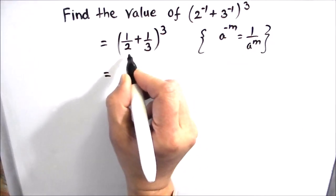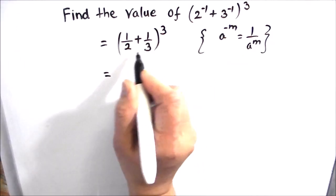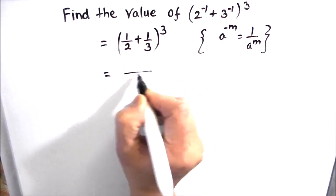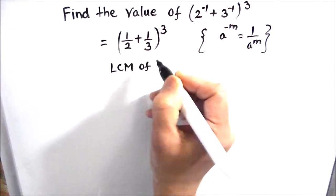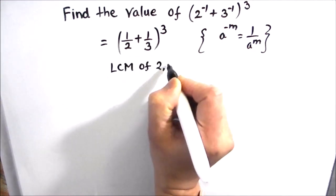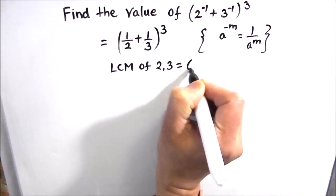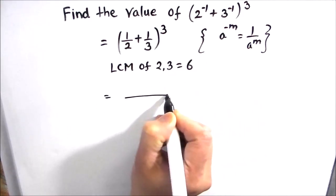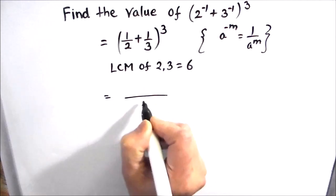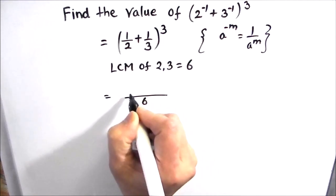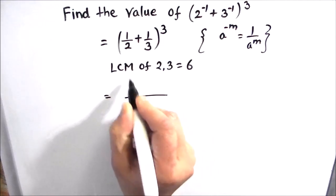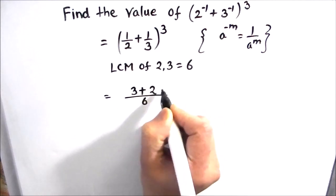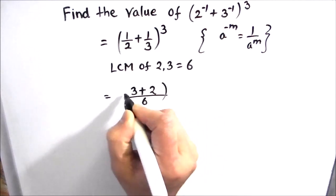Now we have 1 upon 2 plus 1 upon 3, and we can easily add the two fractions by finding the LCM. The LCM of 2 and 3 is 6. So let's make the denominator common, that is 6. So 2 times 3 is 6 and 3 times 1 is 3, plus 3 times 2 is 6 and 2 times 1 is 2.